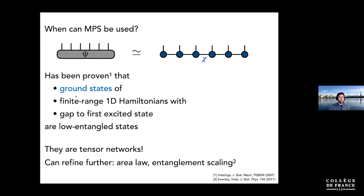This also empirically holds in 2D, and even when interactions are longer range — though these are more approximate and not proven statements. Ground states of quantum many-body systems are tensor networks or very close to tensor networks. This can be refined further through concepts like the area law or boundary law of entanglement scaling, and there's a beautiful article by Glen Evenbly and Guifré Vidal that lays out this whole theory, which I highly recommend.